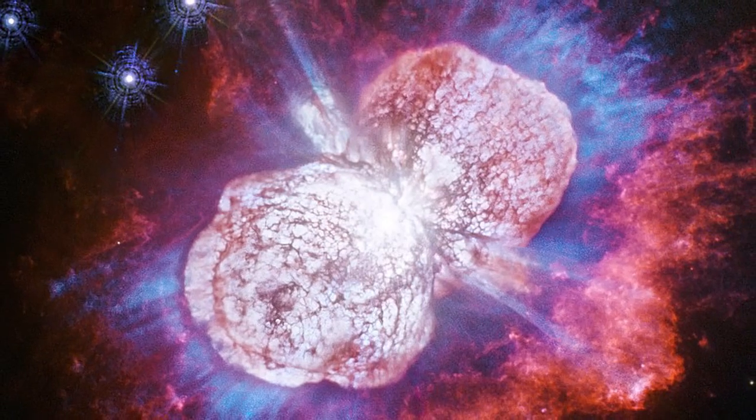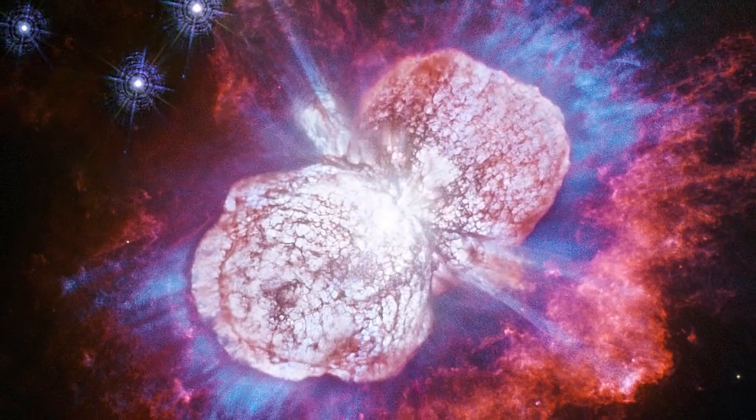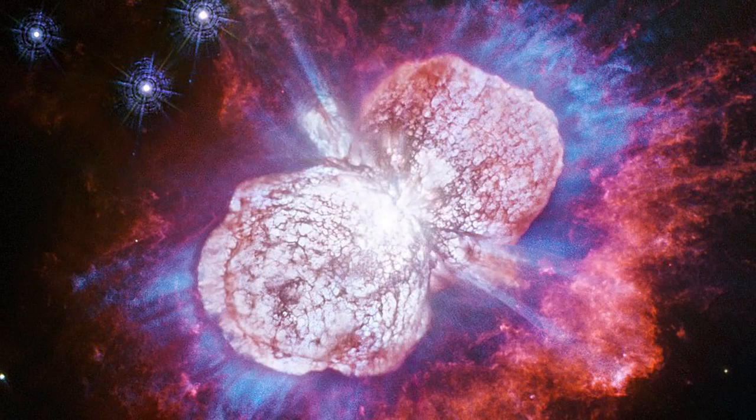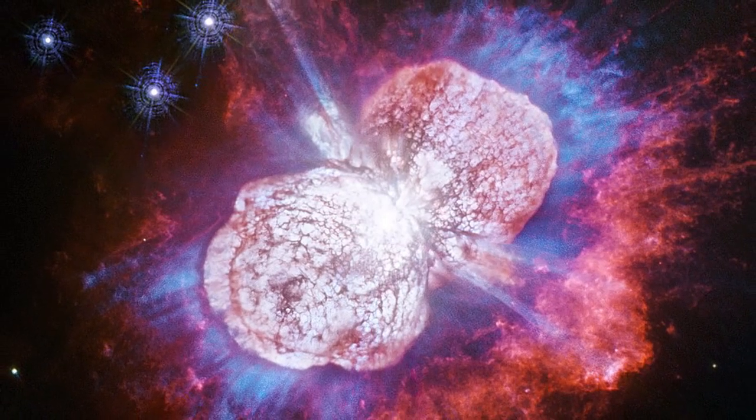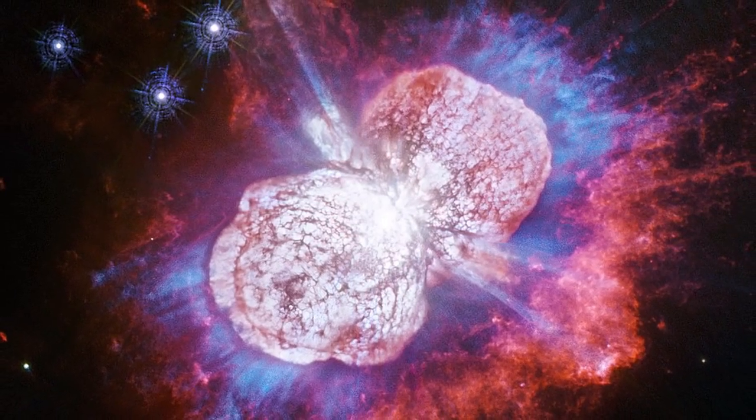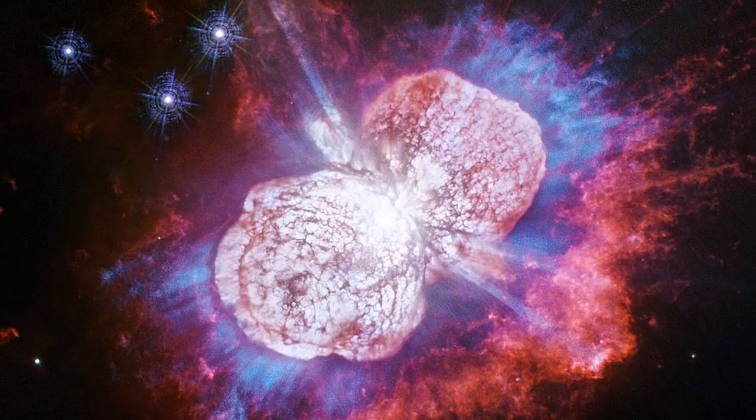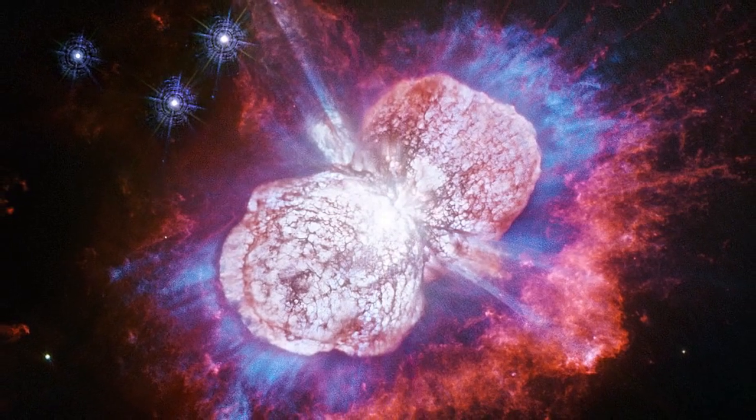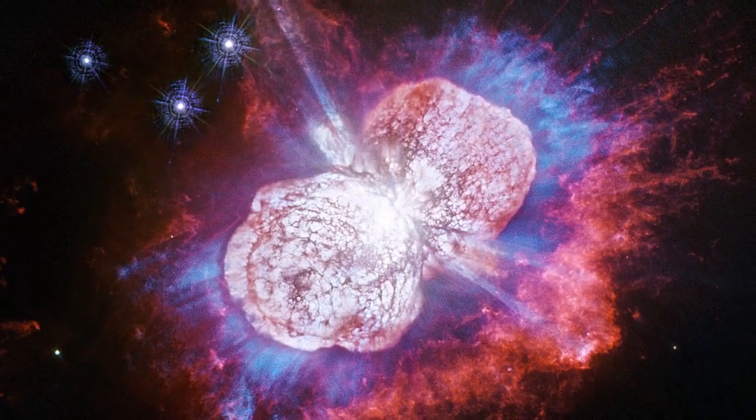For example, supernova eruptions take six weeks to go from normal to maximum light, then six and a half months to fade. In the furthest galaxies, supernovas brighten and fade about 25% slower, taking up to nine weeks to brighten and even longer than nine months to fade.